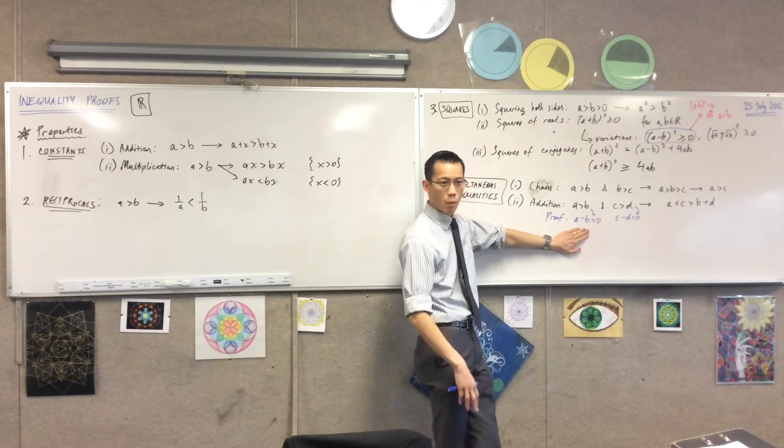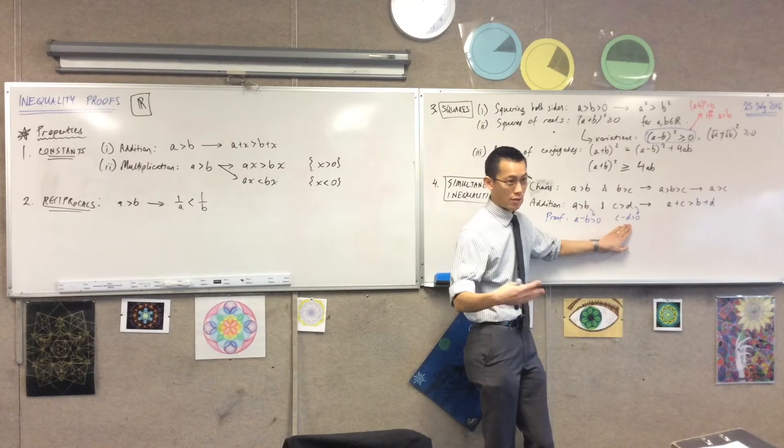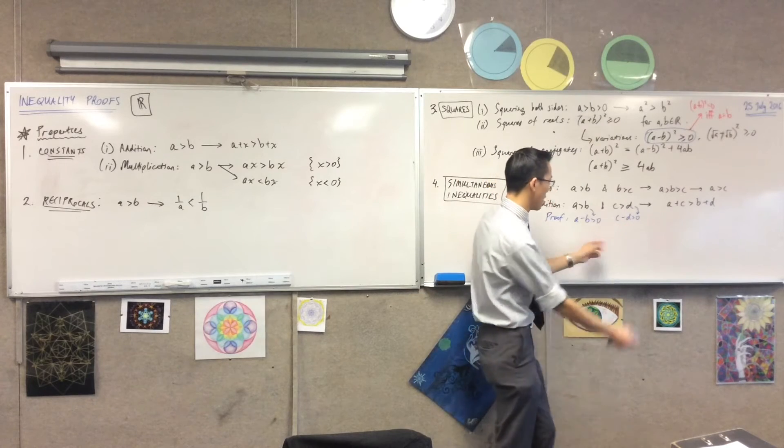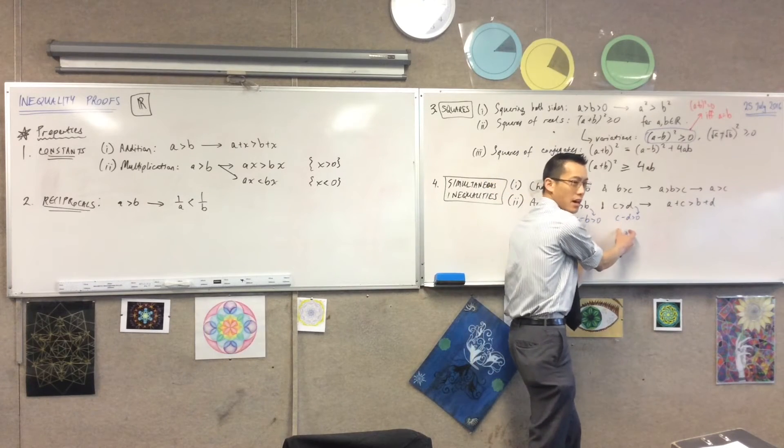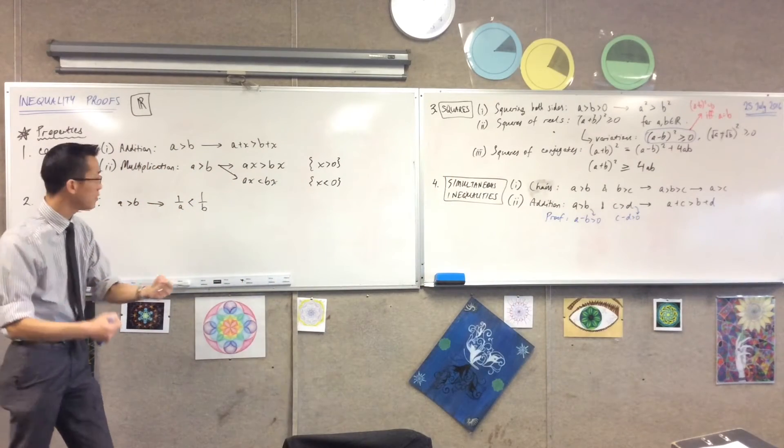So now I've got, hey, this number, whatever it is, A take away B, it's positive. And this number, C take away D, is also positive. So these two numbers together, they have to be positive, right? Does that make sense when you combine them? That's what's going on here.